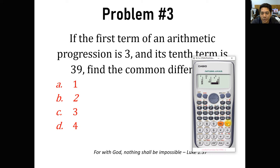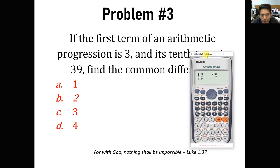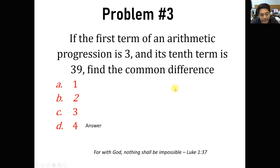Press AC to store the values. Then shift stat, go to reg. This time, we are going to use b — number 2 — then click equals. We get b equals 4. That denotes the common difference of that arithmetic progression. So the answer is 4, without using any formula.